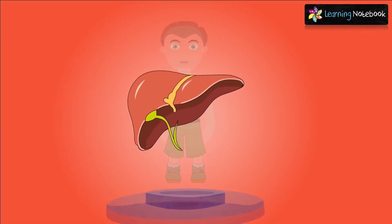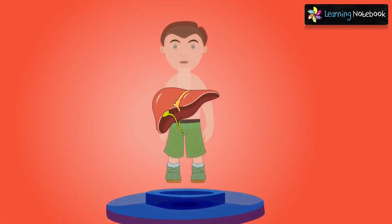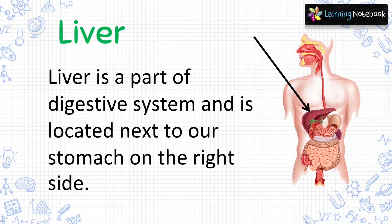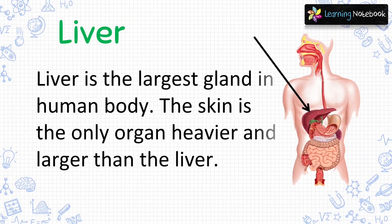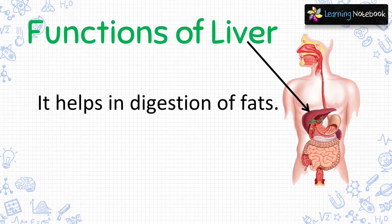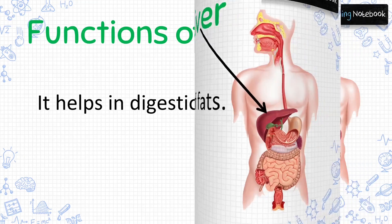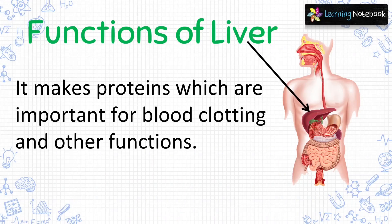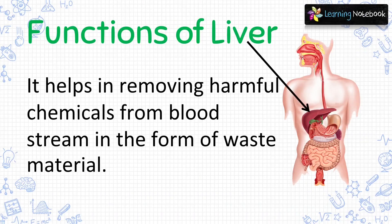The next internal organ is liver. Liver is a part of our digestive system and it is located next to our stomach on the right side. Liver is the largest gland in our human body — the skin is the only organ heavier and larger than the liver. The liver helps in digestion of fats, makes proteins important for blood clotting, and also helps in removing harmful chemicals from the bloodstream in the form of waste material.